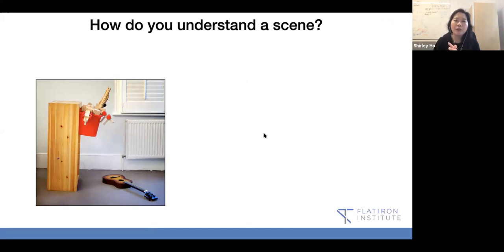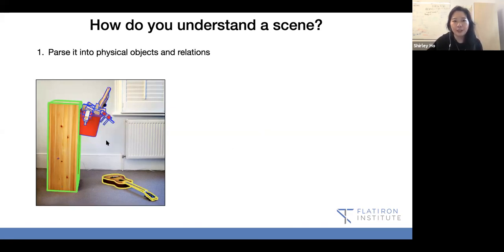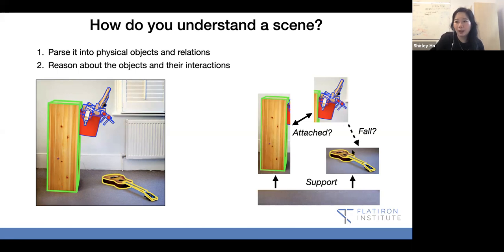We'll start from a vision perspective, thinking about how to understand a scene like this. For many parents in the pandemic, we see toy boxes attached to shelves, guitars that might be hit, and shelves that might fall off. We humans parse the situation into physical objects and relationships, thinking about how things interact with each other.